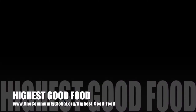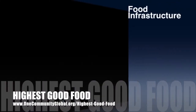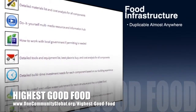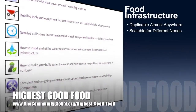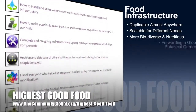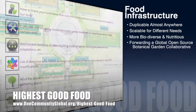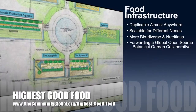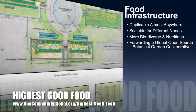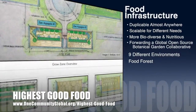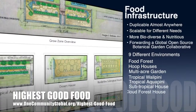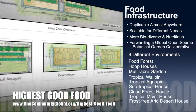OneCommunity's approach to Highest Good Food is duplicable almost anywhere, scalable for different needs, more biodiverse and nutritious, part of forwarding a global open source botanical garden collaborative, and includes 9 different free shared and duplicable growing environments.